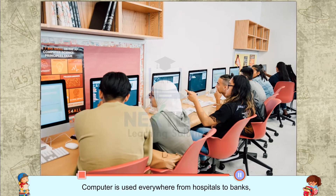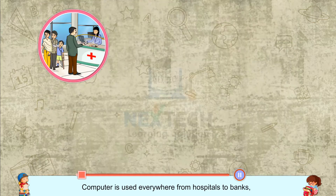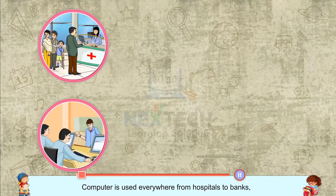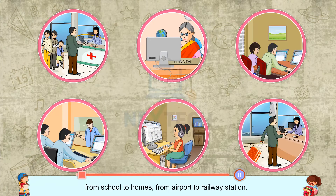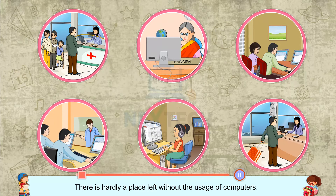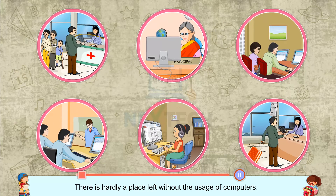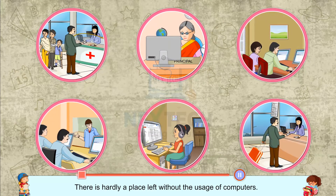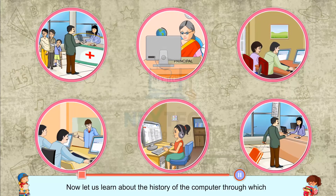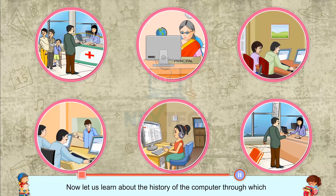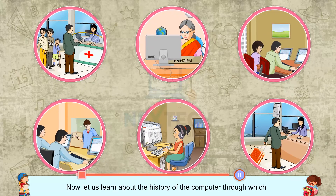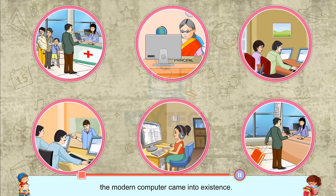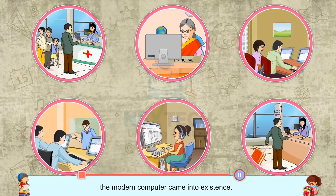Computer is used everywhere — from hospitals to banks, from school to homes, from airport to railway station. There is hardly a place left without the usage of computers. Now, let us learn about the history of the computer through which the modern computer came into existence.